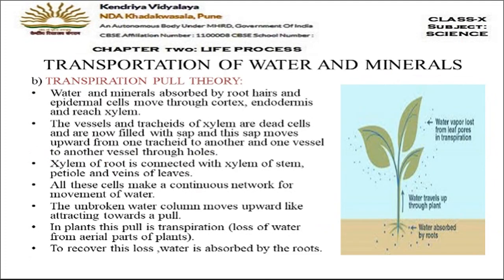The second is the transpiration pull theory. Transpiration is the loss of excess water in the form of water vapor from the aerial parts, especially leaves. Water and minerals absorbed by root hairs move through cortex and reach the xylem. The vessels and tracheids cells of xylem are dead cells filled with sap, and water moves upward from one tracheids to another.